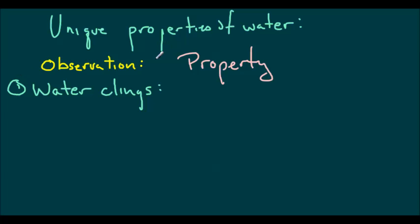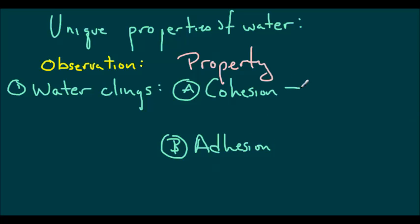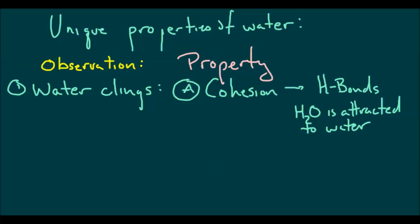The properties that we're going to talk about with water clinging are cohesion or adhesion. Cohesion is the property that water possesses that it clings to itself. And this is due to H-bonds. Water is attracted to itself. And what that means is that when you have water attracted to itself, you have things like surface tension.